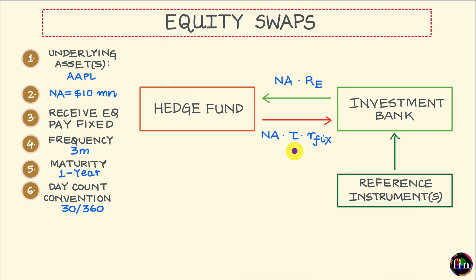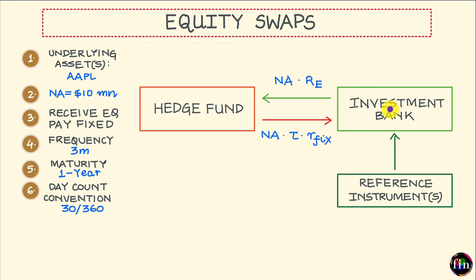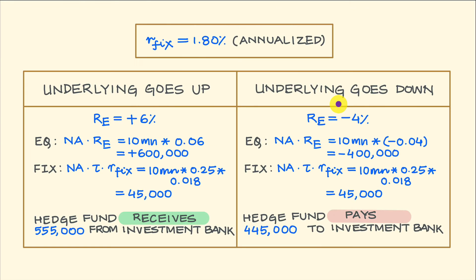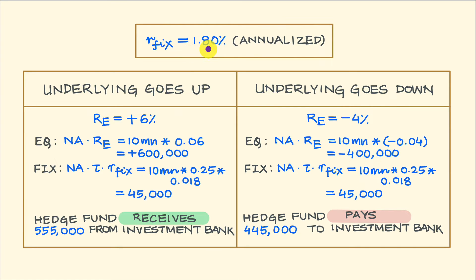At the inception of this equity swap, the investment bank prices the equity swap, which means it calculates the fixed rate of interest such that the value of this equity swap at its inception is equal to zero for both the hedge fund as well as the investment bank. It starts off as a fair equity swap for both parties involved. Let's say this fixed rate of interest comes out to be 1.8% per annum — it is an annualized number.